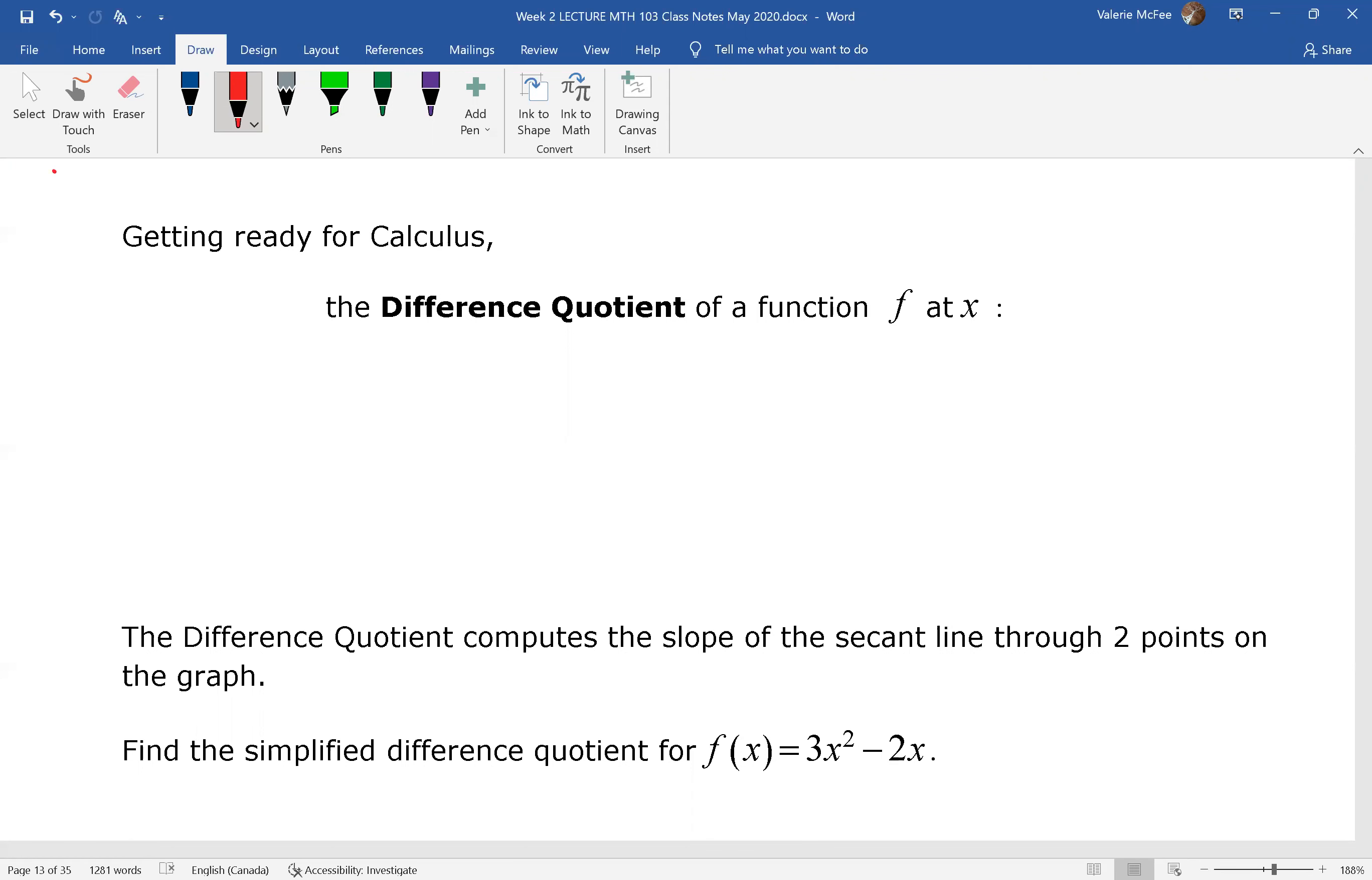Let's finish this lecture by looking at the difference quotient of a function. The difference quotient is f(x+h) minus f(x) all over h. And of course, the denominator cannot equal zero. The difference quotient computes the slope of the secant line through two points on a graph. It's finding the average rate of change over some interval. In this case, the interval would be h.